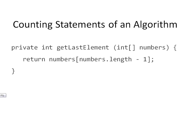Let's have a look at the first example. This method is called getLastElement. It has one parameter, which is an integer array, and it returns the last element of the array. Let's look at each step that has to be executed in order to run this code.